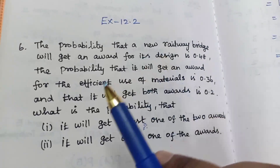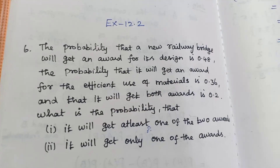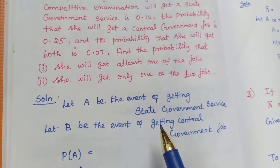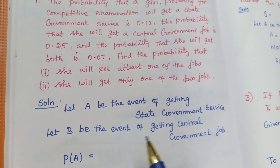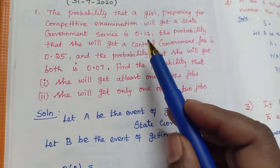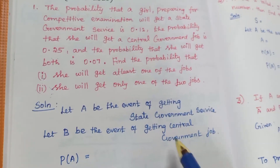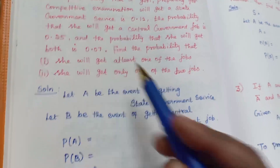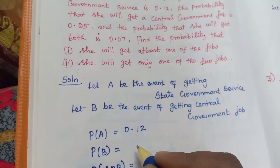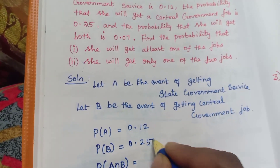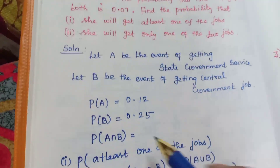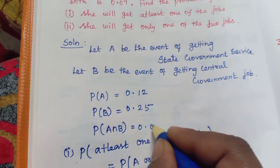With the reference of exercise 12.26, we can solve the assignment problem. Let A be the event of getting state government service. Let B be the event of getting central government job. So P of A is equal to 0.12, P of B is equal to 0.25, and the probability that she will get both — P of A intersection B — is 0.07.